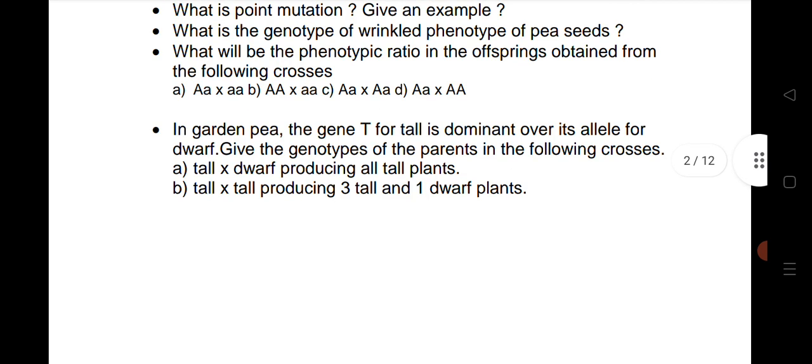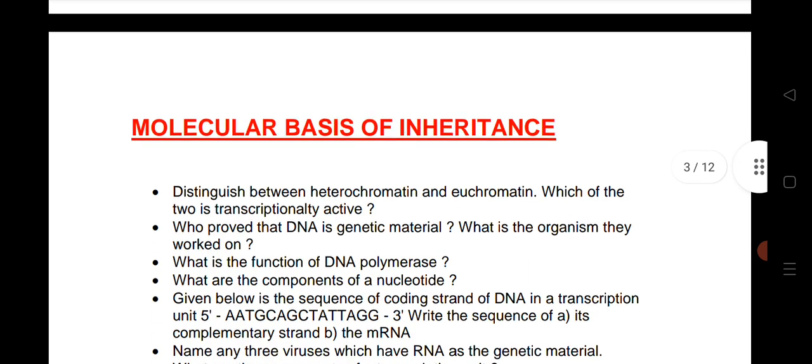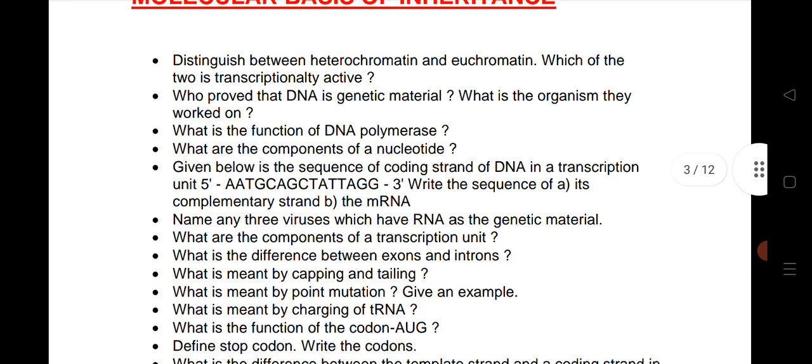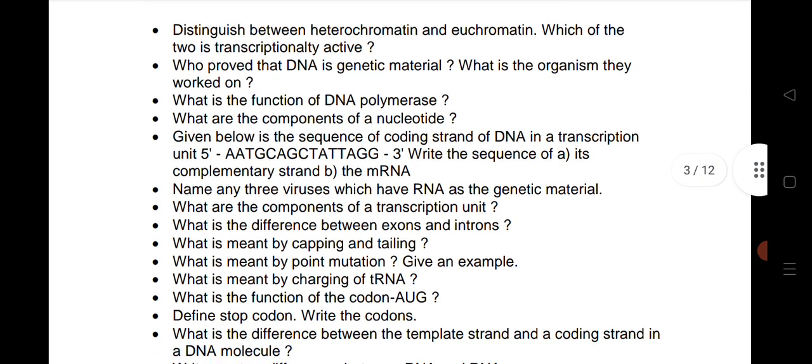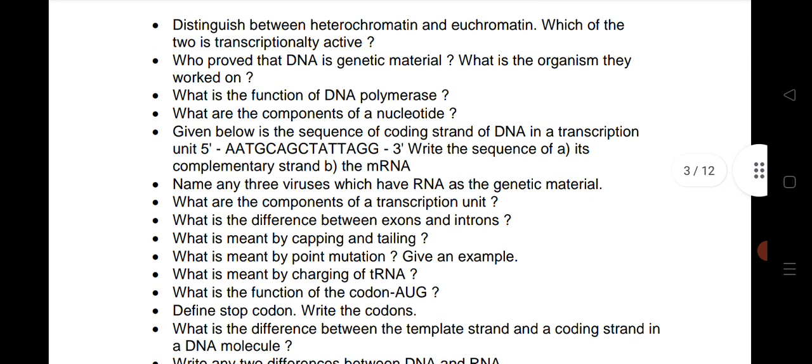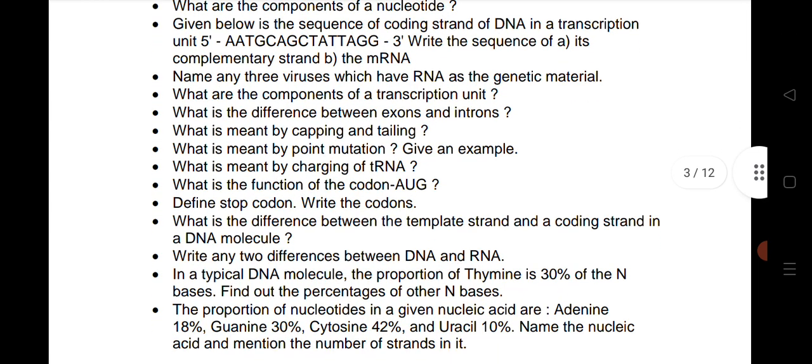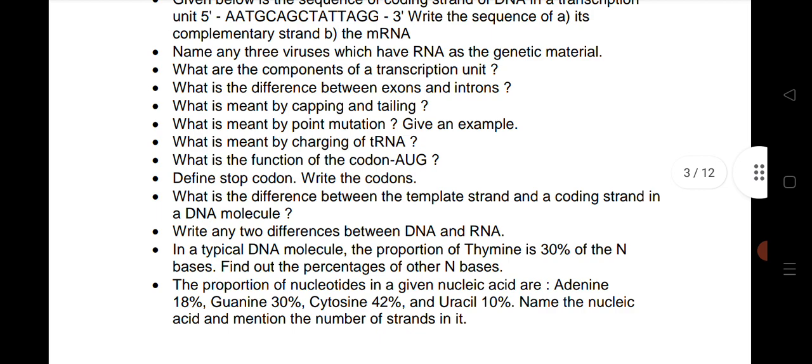Next, in garden pea the gene T for tall is dominant over its allele. This is a very important question from this chapter. Molecular Basis of Inheritance, I have listed the questions here. You can take the screenshot for your reference. All very important questions, see here up to the last one, the proportion of nucleotides.